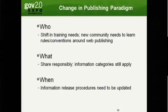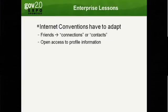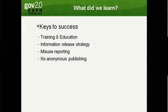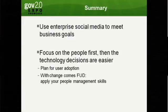What you publish matters — loose lips still sink ships. You have to share information responsibly, and when you publish needs to be timely. Those conventions also have to adapt in the enterprise. We actually changed 'friends' to 'connections' because we didn't want to imply any special relationship. It's more flat — everyone can see everyone's profile information. So what I would suggest to you all is: push training and education, have an information release strategy, understand how you'll handle misuse if it comes up, and provide for named publishing so you know who the person was who spoke.